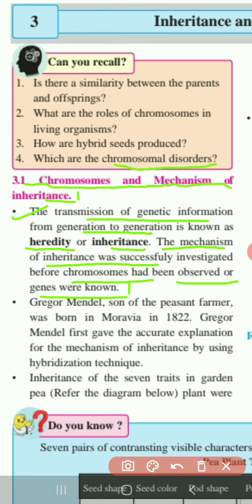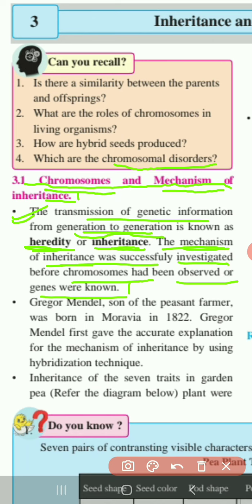Our topic is Chromosomes and Mechanism of Inheritance. Chromosome is a Greek word in which 'chroma' means color and 'soma' means body — so chromosomes are colored bodies responsible for inheritance or transmission of characters. Heredity means the transfer of genetic information from generation to generation. The mechanism of inheritance was successfully investigated even when chromosomes and genes were not yet known.